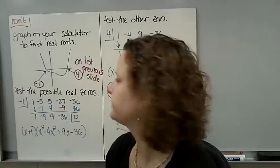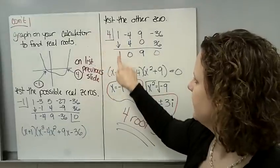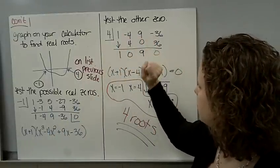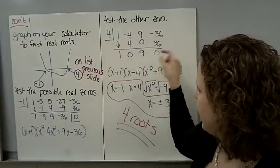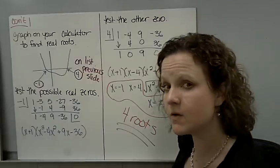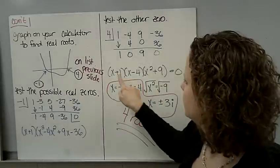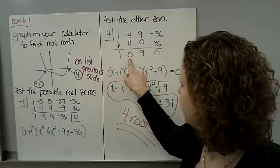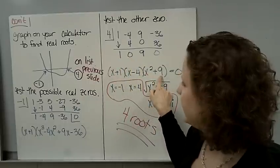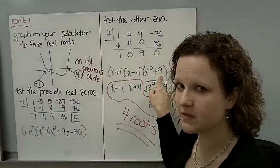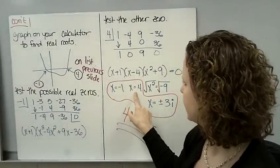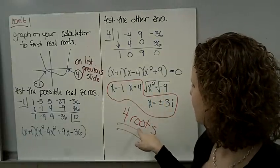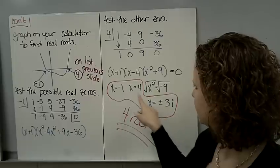Let's do that one more time with the 4. I use the coefficients here. 1, -4, 9, -36. Multiply, add, multiply, add. I have a remainder of 0. That means that 4 is a root. So I have x + 1, x - 4. And what's left over? x squared. That's a 0x + 9. Set each one of those parentheses equal to 0 and solve for x. x = -1, x = 4. This one needs to be solved a little bit further. x = plus or minus 3i. I got 4 roots. Complex, two real.